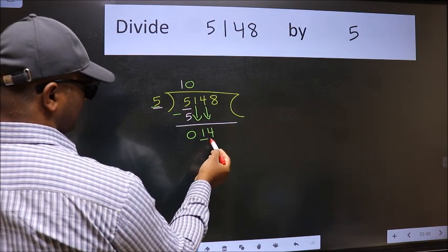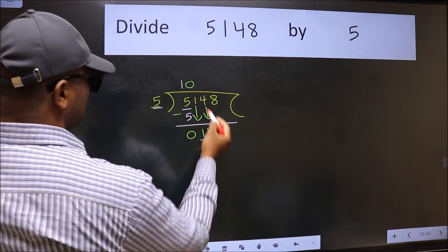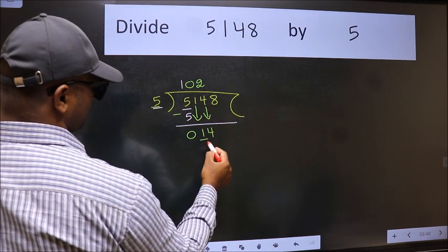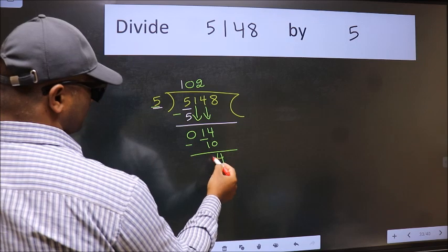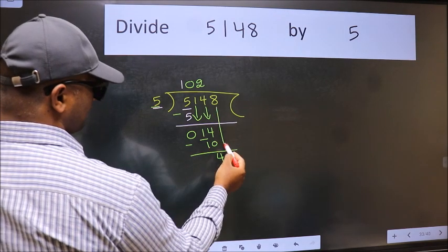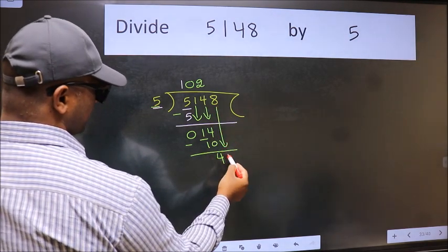Now 14. A number close to 14 in the 5 table is 5 twos 10. Now we subtract. We get 4.